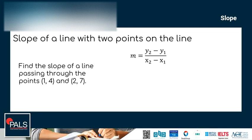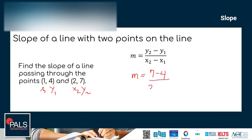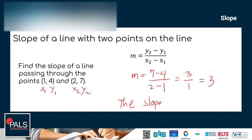To solve, let us mark the two points. Let's choose the first coordinate points as x sub 1 and y sub 1, and the second one as x sub 2 and y sub 2, then plug in all the values on the formula. So we have M equals 7 minus 4, all over 2 minus 1. Simplifying: 7 minus 4 is 3, 2 minus 1 is 1, so the slope is 3.